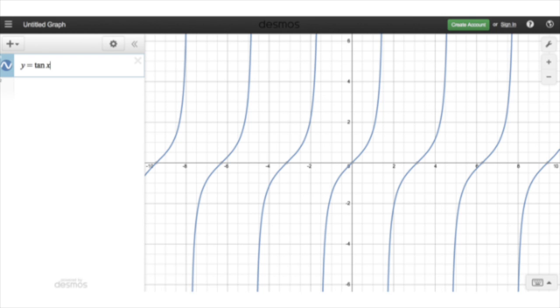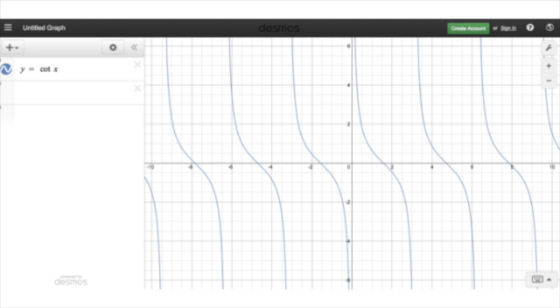And the cotangent, which would be the inverse, the reciprocal of the tangent, would turn them reverse. Would do that. And that's that.